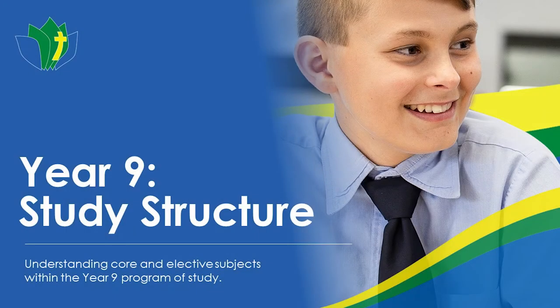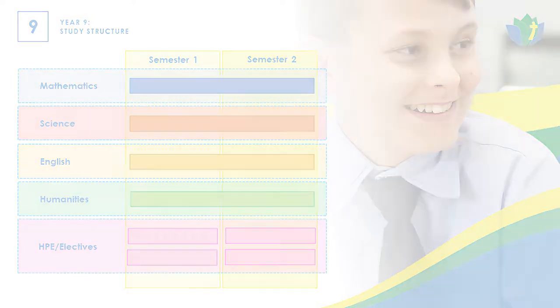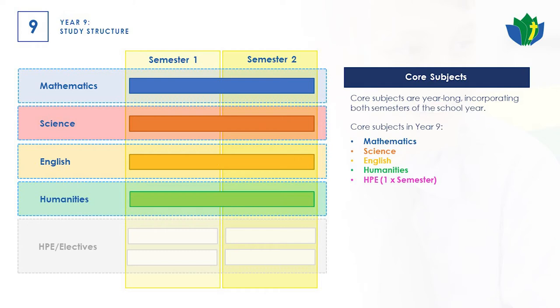What does Year 9 look like for next year? I'll go through Year 9 and Year 10 separately because they are quite different. Year 9 is made up of a mixture of core and elective subjects. The core subjects are Maths, Science, English and Humanities. They are all year-long, and students will automatically choose those four when they do their selections.